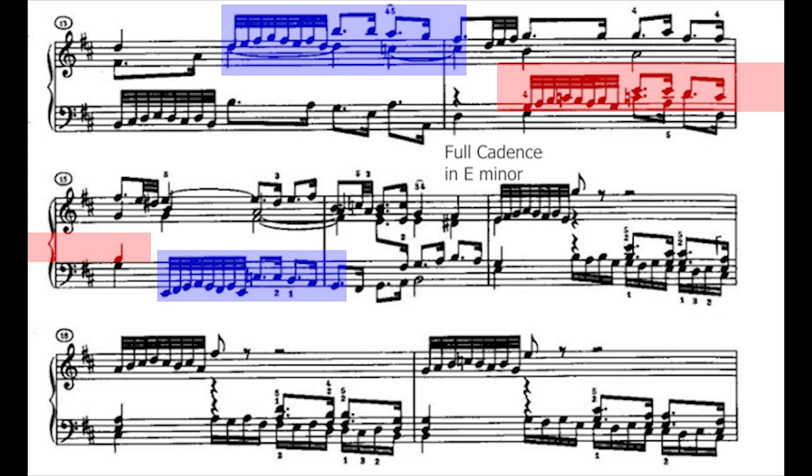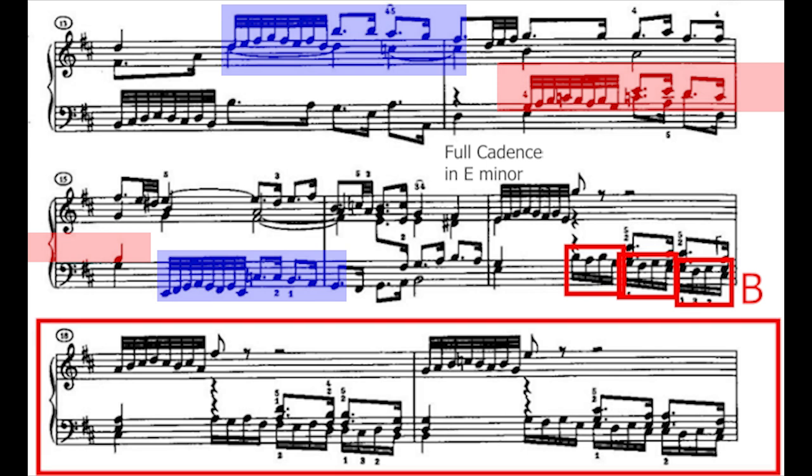The second episode is a free inversion and an extension of the first. The semiquavers, which were seen in the soprano in measure nine, are now in the bass. The harmony, like before, is a series of chords of the sixth descending by thirds. The sequence is then continued for another bar.